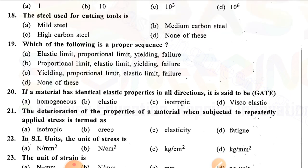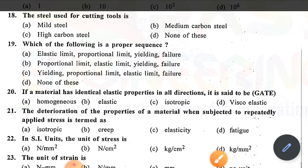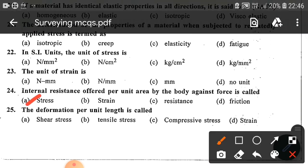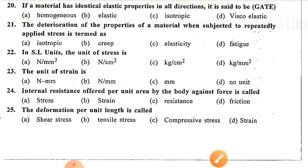Question number twenty-one: The deterioration of properties of a material when subjected to repeatedly applied stress is determined as — option D is correct — fatigue. Question number twenty-two: In SI units, the unit of stress is — option is correct — Newton per mm². Question number twenty-three: The unit of strain is — option D is correct — no unit. Question number twenty-four: Internal resistance offered per unit area by the body against force is called — option A is correct — stress. Question number twenty-five: The deformation per unit length is called — option D is correct — strain.